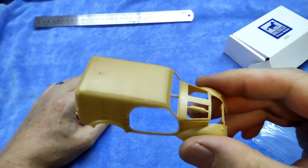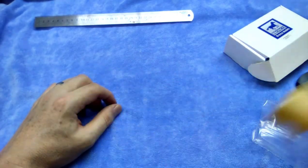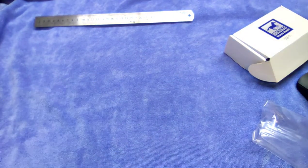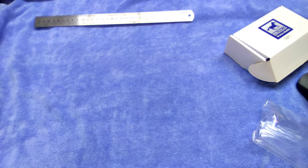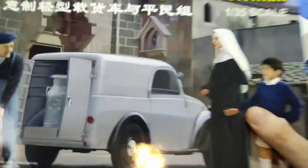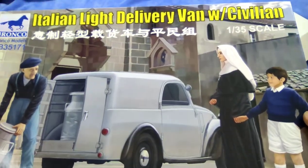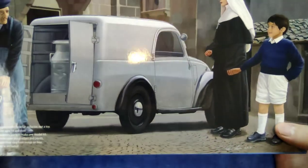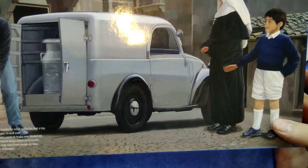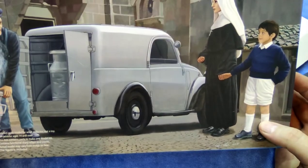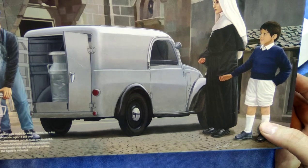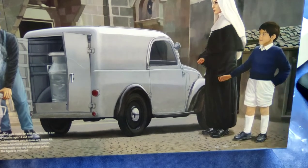Around about, and here we are. That's it, that was the Italian Light Delivery Van or between you and me the Fiat Topolino delivery van from Bronco. I think it's a beautiful little car. I'm looking forward to building it. Thanks very much for watching. Hope you guys have a good time, and greetings from Cape Town. Cheers.